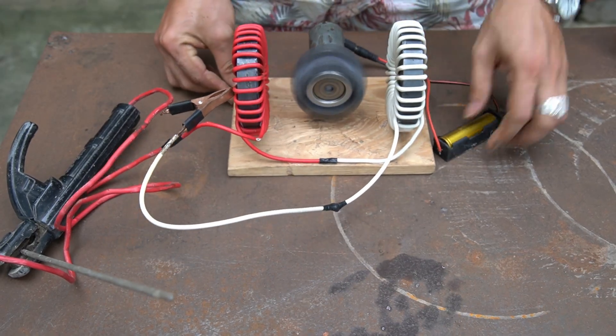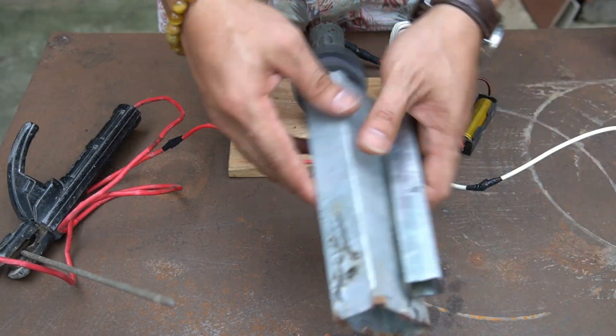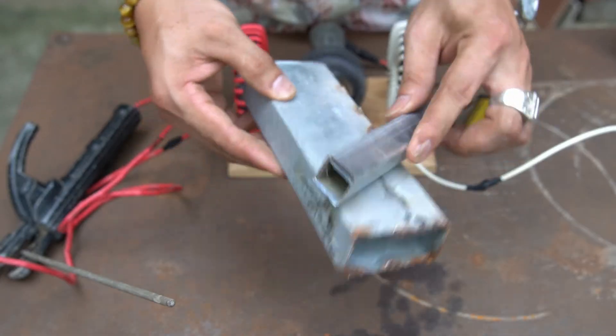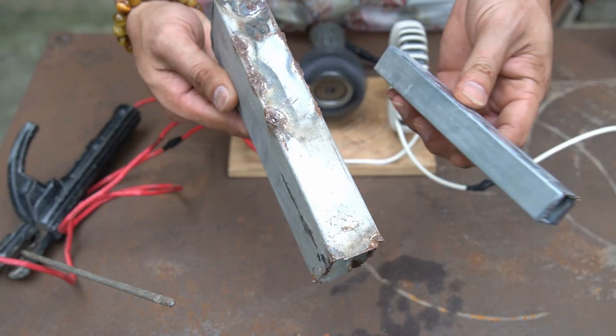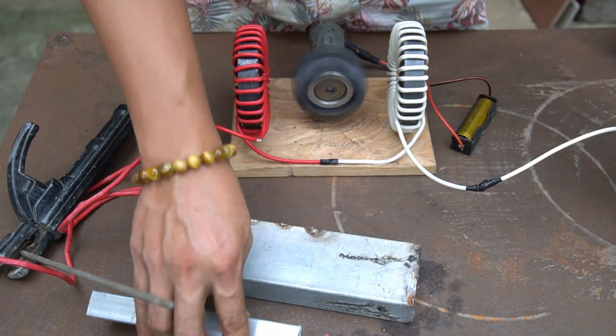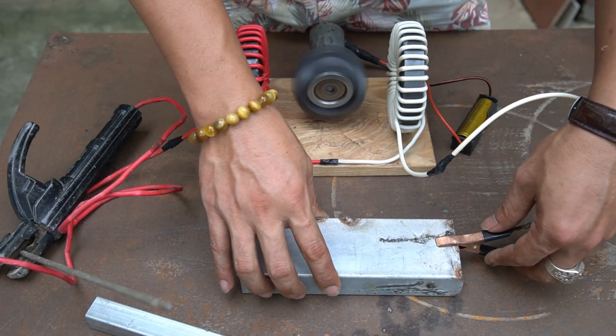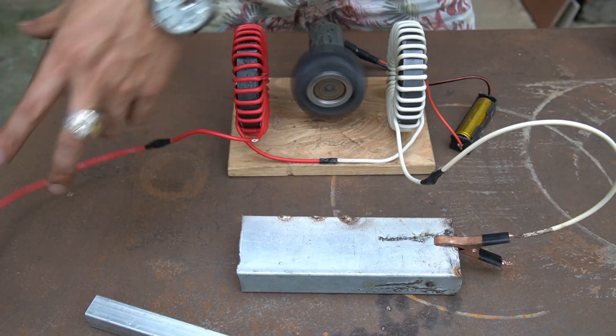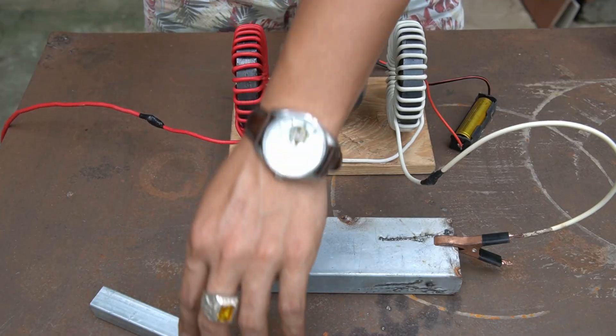While the motor is spinning we can use the soldering iron to weld. I use two galvanized pipes to test the welder.